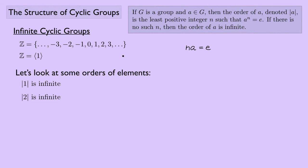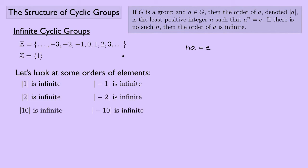Similarly, 2+2=4, +2=6, +2=8, +2=10, +2=12, and so on — the order of 2 is infinite. Likewise the order of 10 is infinite: 10+10=20, +10=30, +10=40, and so on. The order of −1 is also infinite: −1+(−1)=−2, +(−1)=−3, etc. In fact, every element except the identity has infinite order.